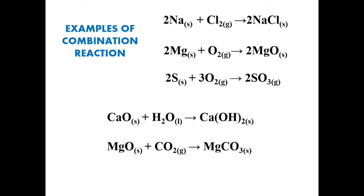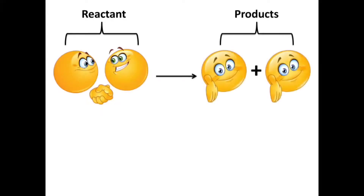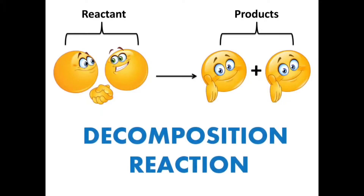Let us move on to the next type of reaction — decomposition reaction. Here we have one reactant which is breaking down into two products. One reactant breaking down to form two products; these types of reactions are known as decomposition reactions.